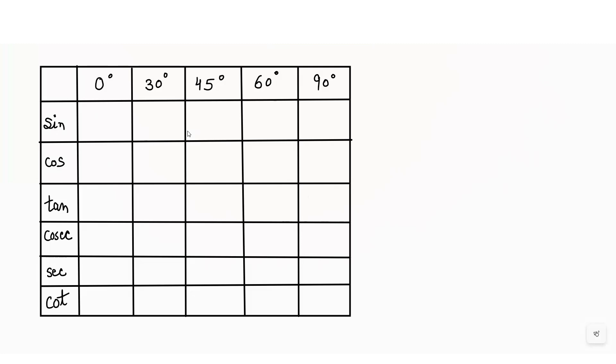Hello students, today we will learn how to make a table for the trigonometric ratios for the values of 0 degree, 30 degree, 45, 60 degree, and 90 degree. It's a very important topic, so let's learn about it.